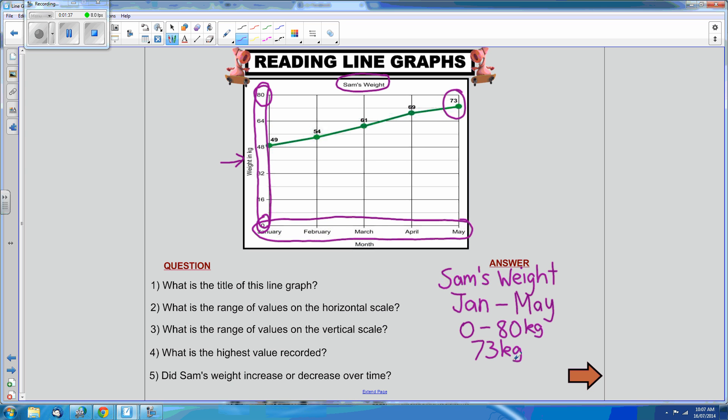Question 5: Did Sam's weight increase or decrease over time? The beauty of a line graph is that it is easy to see at a glance whether something has increased or decreased. This is what we use the lines that connect the points for. We can see these lines connecting the points is going up. When the line is going up, we can see that the values have increased. Therefore, Sam's weight increased over time.